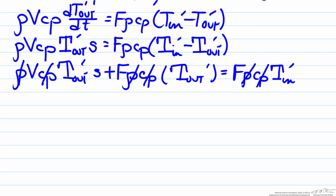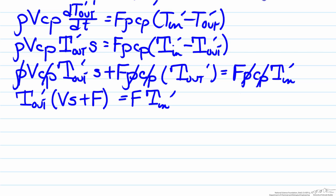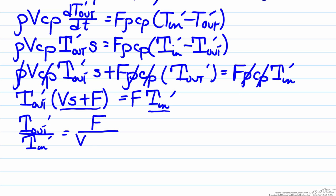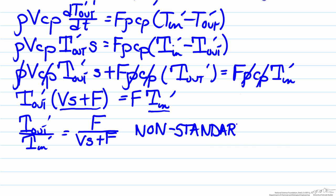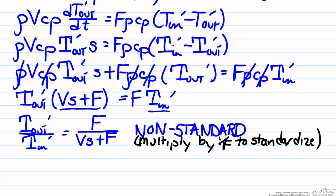We can now factor out T_out'(s) on the left side. To get our transfer function model, we divide both sides by (V·s plus f) on the left and T_in'(s) on the right. This gives T_out'(s) / T_in'(s) equals f divided by (V·s plus f). This is a transfer function model, but it is non-standard because the constant in the denominator is f, not one. To standardize it, we multiply numerator and denominator by one over f, yielding the transfer function in standard form.